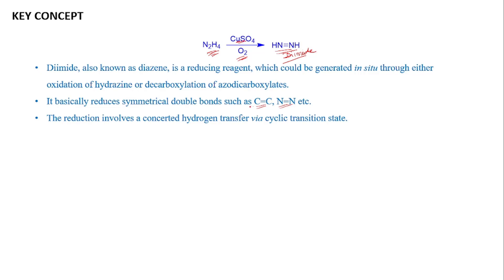The reduction involves a concerted hydrogen transfer. This concerted hydrogen transfer happens through a cyclic transition state. How does it look? Suppose we have this alkene functionality and now we are going to treat this with this diamide. What can happen? It can take a proton. Now if we draw the transition state, it will look like...